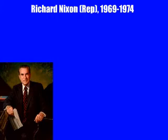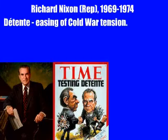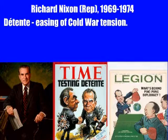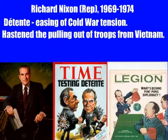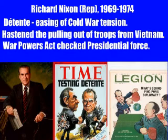Richard Nixon, Eisenhower's former vice president, was elected in 1968. In the Cold War, he was known for détente, or the easing of tensions between the United States and Communist powers. Nixon extended ping-pong diplomacy as he visited Communist China and Mao Zedong. Nixon also inherited the Vietnam War and, in 1973, announced a ceasefire. That same year, Congress passed the War Powers Act, which stated that although the president is commander-in-chief, he can't use extensive overseas force without the consent of Congress.